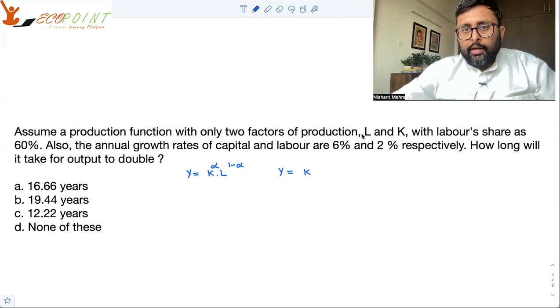Y is equal to K to the power 0.4, since labor's share is 60%, so capital's share is going to be 40%. L to the power 0.6. This is what my production function is. I can take log of both the sides.